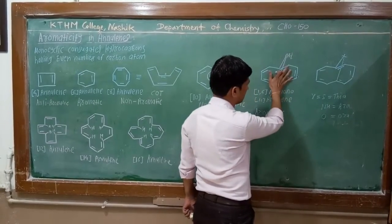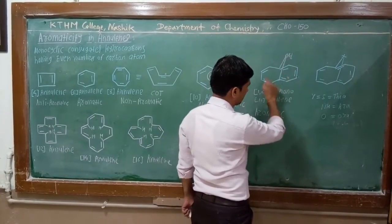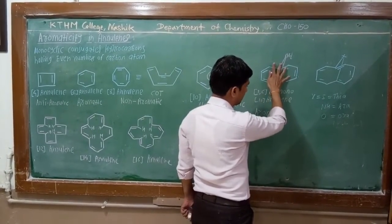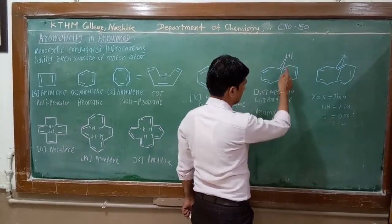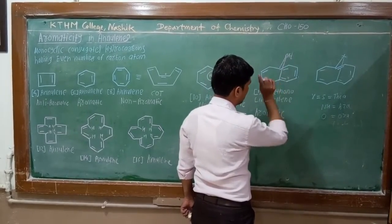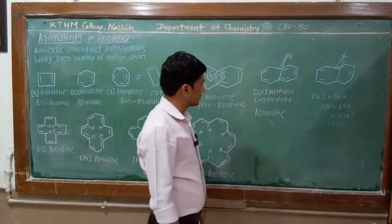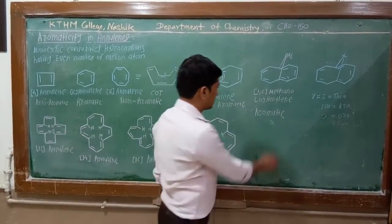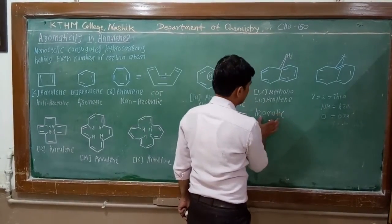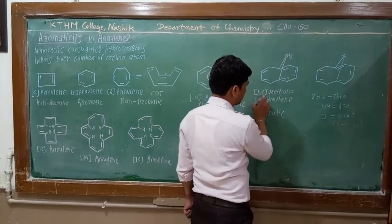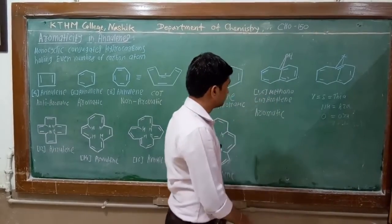This is planar, cyclic, fully conjugated, and containing 10 pi electrons. 10 pi electrons satisfy the aromatic system. Therefore we can say that 1,6-methano-10-annulin is an aromatic compound.